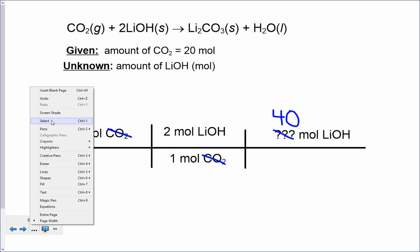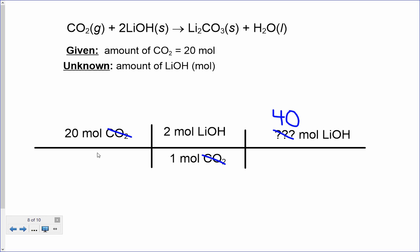That's just an introduction to stoichiometry — just the mole-to-mole ratio, which is the simplest stoichiometry we do. Later on, we'll get into problems where we're given grams. For example, if we're given grams of carbon dioxide, we'd have to convert that to moles first, do this ratio, and then if we want grams of lithium hydroxide, we'd convert the resulting moles back to grams. The mole-to-mole ratio from balanced chemical equations is the new, core concept. Answer the questions on the form below, and I'll see you in class tomorrow.